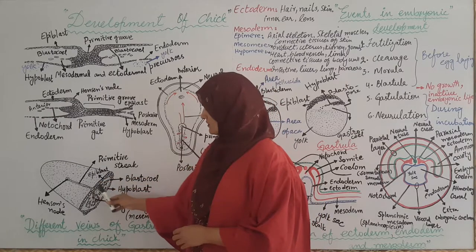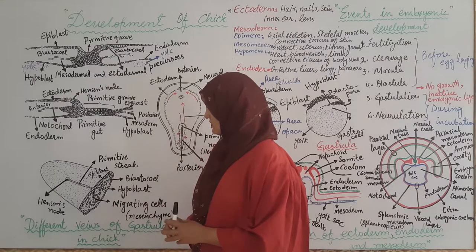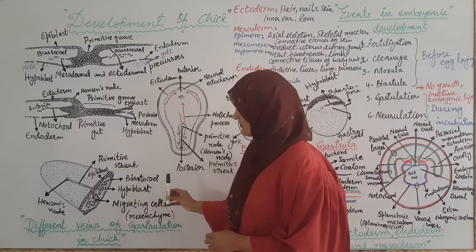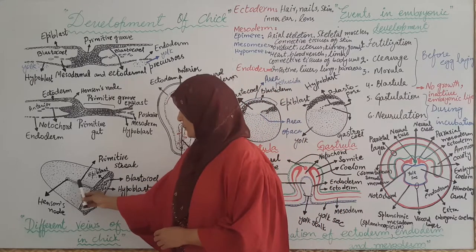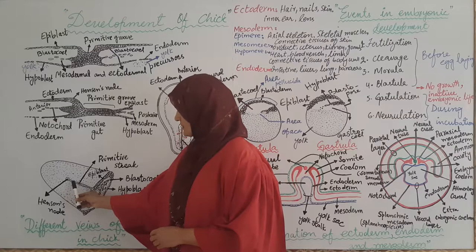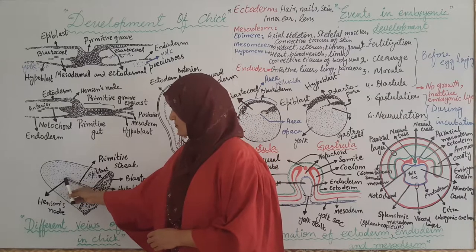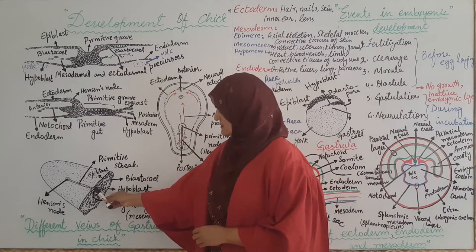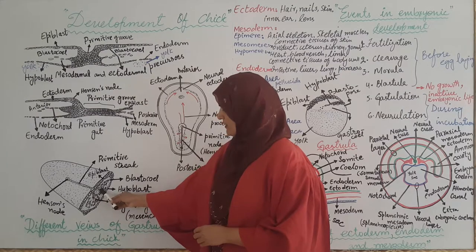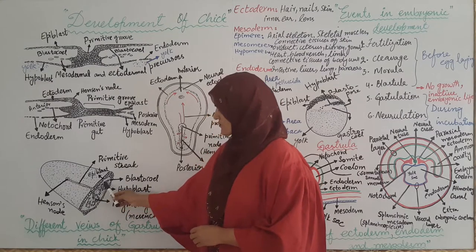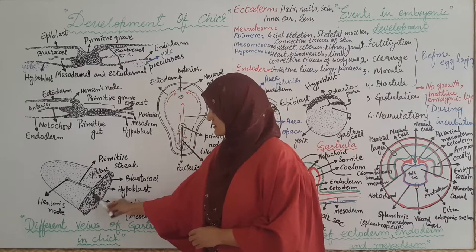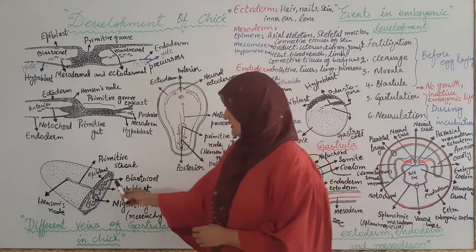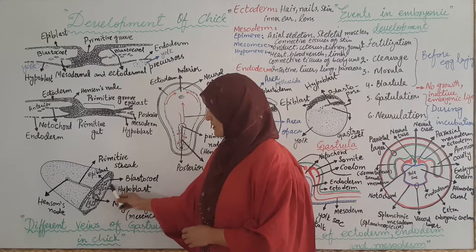In the above view of the primitive streak, you can see that the primitive streak is formed in the germinal layer. Anteriorly, Hensen's knot is formed because of anterior cell migration, while cells migrating from the epiblast laterally into the blastocoel form mesoderm, and cells forming from the endoderm layer are also visible.